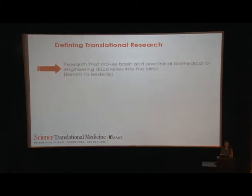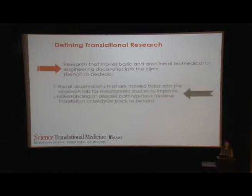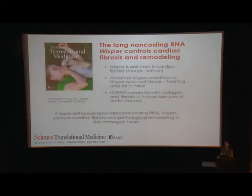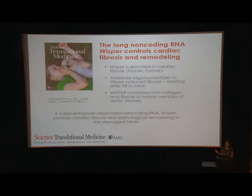Translational research is this bench-to-bedside forward, but it's also the reverse — what have we learned from a clinical trial that teaches us something about disease, or that we can take back to the bench and figure out mechanistically? And then also what needs to change to implement this therapy into clinical practice. Now I want to highlight four of our recent cardiovascular and bioengineering papers. This is a nice example of an early preclinical study that identified a long non-coding RNA enriched in cardiac fibroblasts, and therefore could be a useful target for cardiac fibrosis therapies.